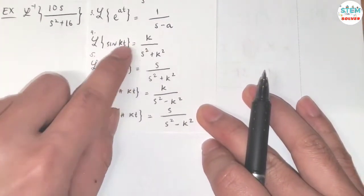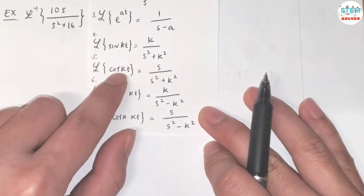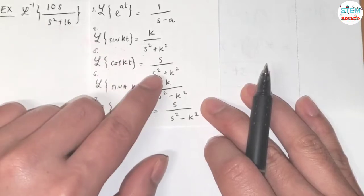For sine, we need k, but for cosine, we need s on the top. In this case, we have s on the top, so it should be cosine, but we have to make it match this form.